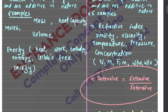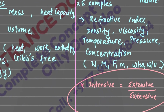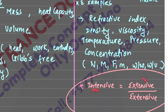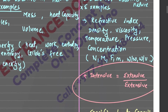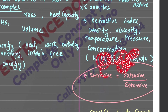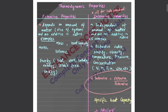So we have to look at the same examples. We have to look at the extensive-to-extensive ratio. For example, pressure is force over area — force and area are both extensive, but their ratio is intensive. Similarly, molarity is the number of moles divided by volume, and that ratio of moles is also intensive. This is the intensive property.